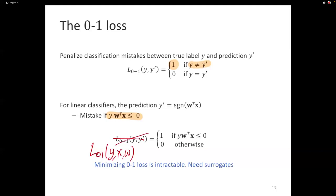This is the thing that we ideally like to optimize if all we care about is accuracy. Unfortunately, and I mentioned this earlier, minimizing the 0-1 loss is intractable. So we need to have surrogates that are better, that behave better for optimization.